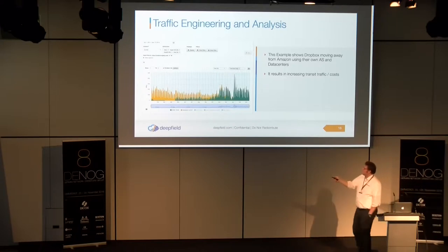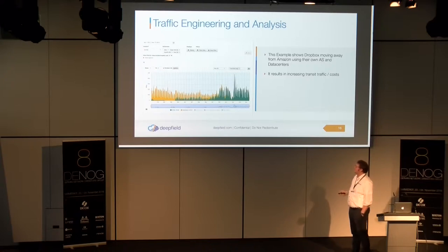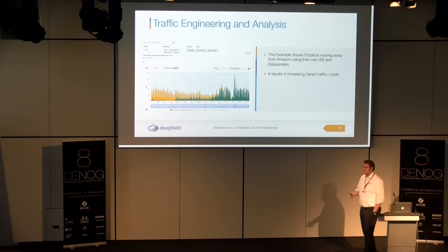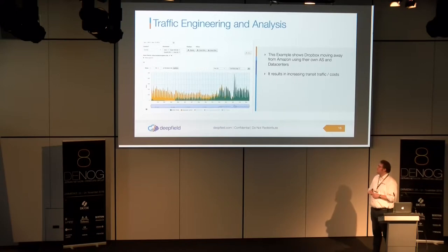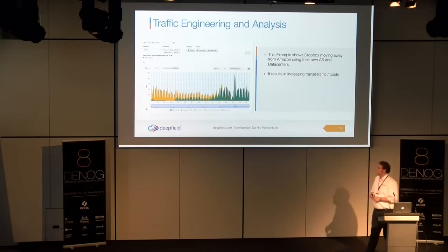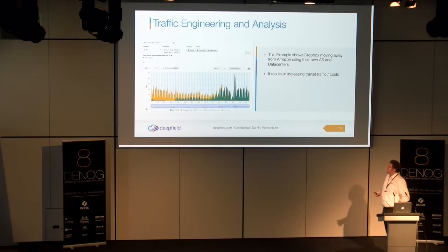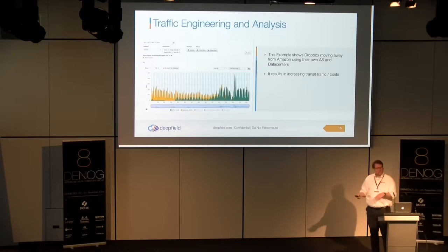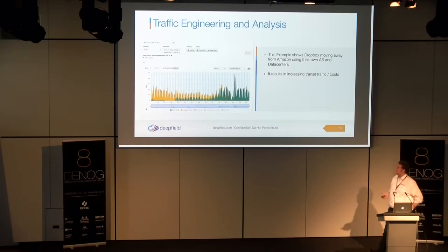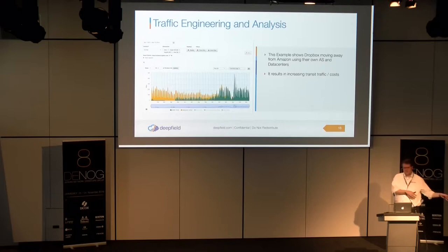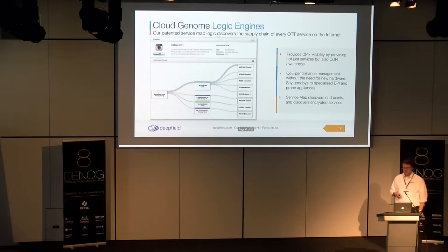How did Dropbox traffic look in February last year versus this year? At the beginning, everything was coming in on the customer's Internet 2 connection — their connection to Amazon, which is Marriott Networks, a quite cheap peering. But AT&T is a paid peering that costs money. So Dropbox moving from Amazon to their own AS had the effect of increasing traffic on the customer's AT&T peering. You need to monitor these kinds of service changes to identify what is causing costs. That's the idea — measuring not only over-the-top services but also how they are delivered into your network.